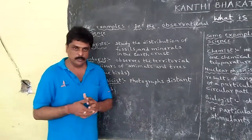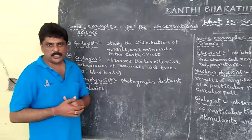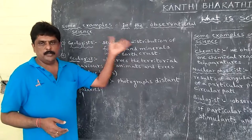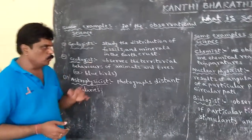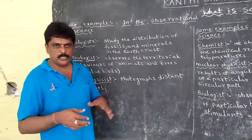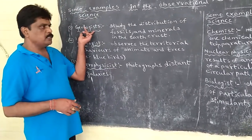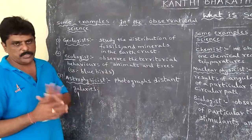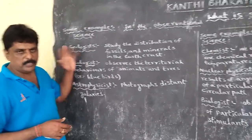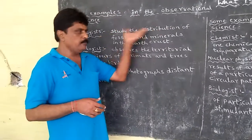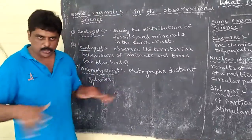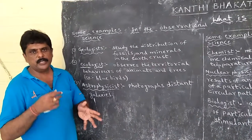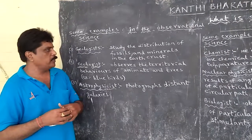Geologists study about fossils. The fossils are obtained from the earth's crust. So geologists study the distribution of fossils and minerals in the earth's crust. This is observational science.